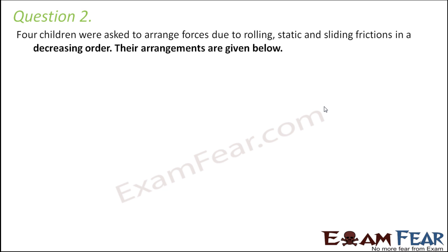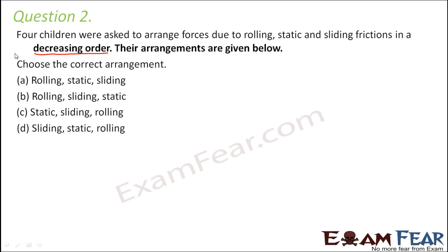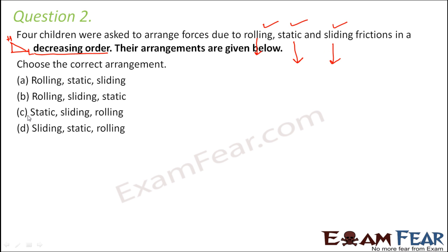Question number two. Four children were asked to arrange forces due to rolling, static, and sliding frictions in decreasing order. We need to arrange from high to low. Static friction is maximum, then comes sliding friction, and at last is rolling friction because rolling reduces friction. So the correct order is: static, sliding, then rolling.